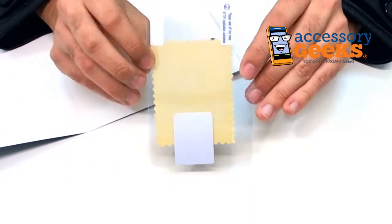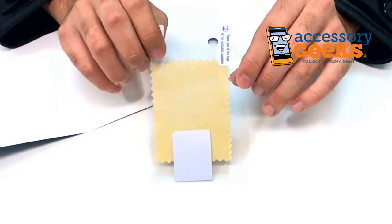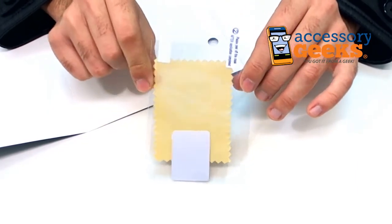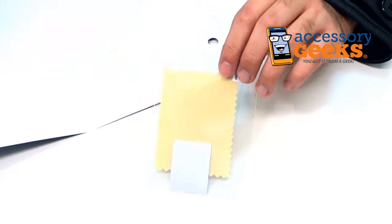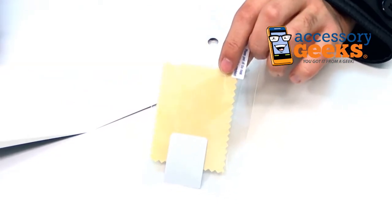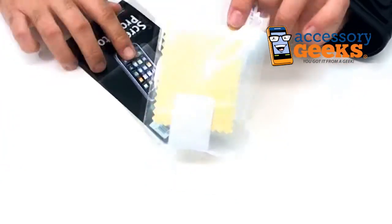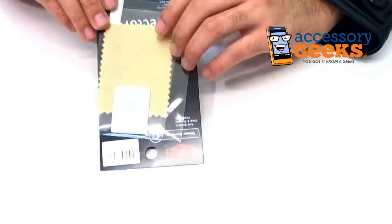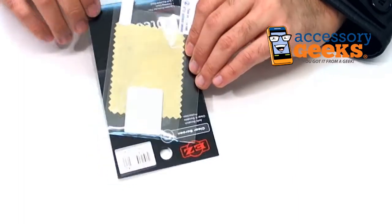Anyway guys, if you have any more questions regarding the HTC Evo 4G Screen Protector, or if you have a question about any of the items we have here at AccessoryGeeks.com, please don't hesitate to give us a call at 1-866-GEEKS-93 or you can always contact us via live chat, Facebook, or email.